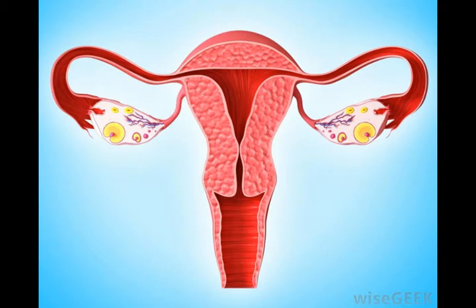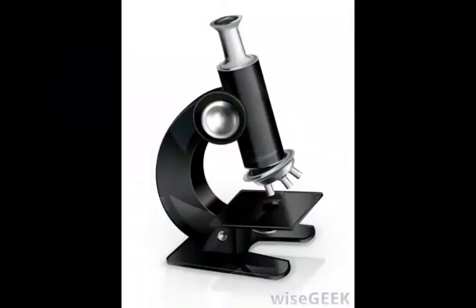Stratified cuboidal cells might be square, round, or hexagonal in shape, with equal dimensions on all sides. When a cross section of stratified cuboidal epithelium is viewed under the microscope, it usually appears as a double or triple layer of round, flat cells packed together. There is also a large, round central nucleus in each cell.